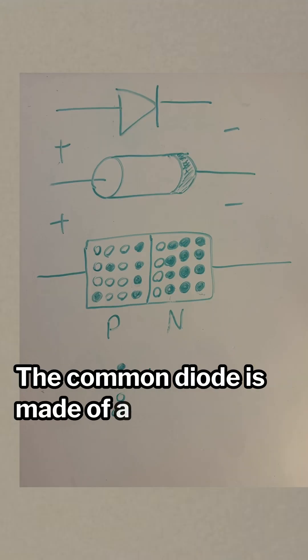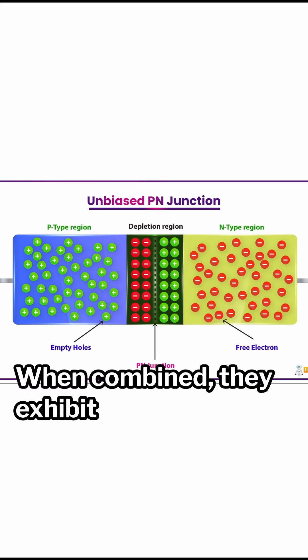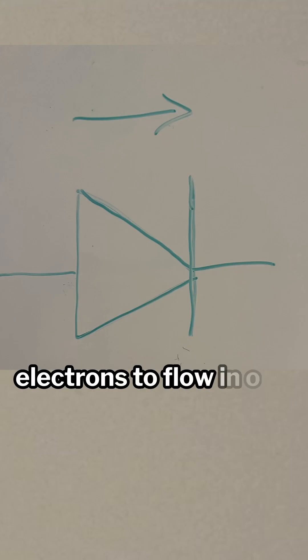The common PN diode is made of a PN junction, which can be thought of as two materials: one with extra electrons and one that's missing electrons. When combined, they exhibit the property of allowing electrons to flow in one direction and not the other.